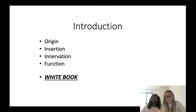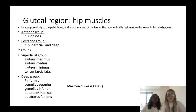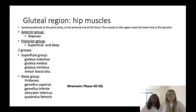After every section, if any of you want to ask a question just comment below and we'll try to answer. So we'll start with the gluteal region - the hip muscles - located posteriorly to the pelvic bone and at the proximal end of the femur. These muscles are divided into two groups: anterior and posterior, and the posterior is further divided into superficial and deep groups.